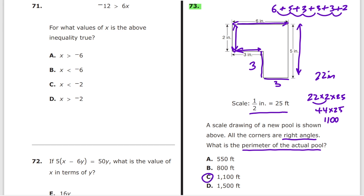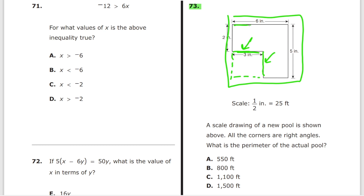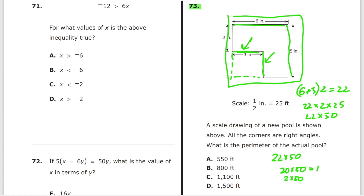I can offer a much faster solution. Notice that the indented side equals an imaginary opposing side, and the other indented side equals its imaginary counterpart. So all we need is the perimeter of the enclosing rectangle: (6 + 5) × 2 = 22 inches. Then 22 × 2 × 25, or equivalently 22 × 50 = 20 × 50 + 2 × 50 = 1000 + 100 = 1100, answer C.